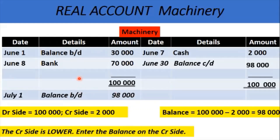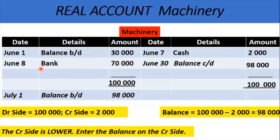If we read this account, we notice that in June we had $30,000 in machinery. On the 7th, we sold some of that machinery as scrap and received $2,000 for it. We then replaced it with new machinery for $70,000 on the 8th. We didn't do anything else in that account until the end of the month, so we carry down the balance of 98,000. Into July, we will have $98,000 of machinery.